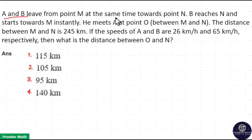A and B leave from point M at the same time towards point N. B reaches N and starts towards M instantly. He meets A at point O. The distance between M and N is 245 km. If the speeds of A and B are 26 and 65 km per hour, then what is the distance between O and N?